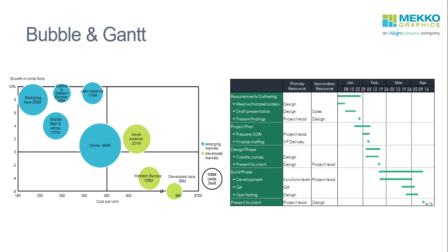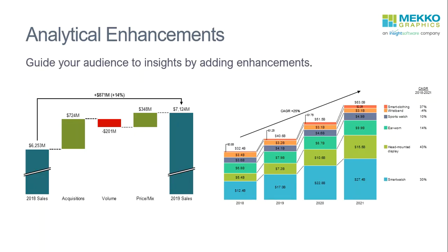Cascade charts are great for presenting changes or walking your audience through a financial report or a piece of analysis. You can also create bubble charts and Gantt charts. The bubble chart gives you a great overview of what's happening in a market, and the Gantt allows you to present a timeline for your project. When you add analytical enhancements to your chart, it makes it much easier to guide your audience to the insights.